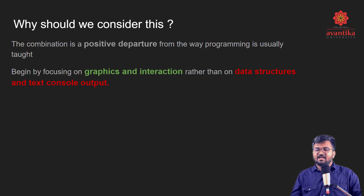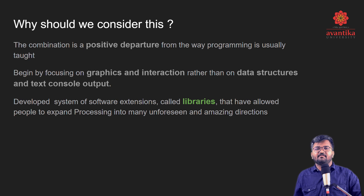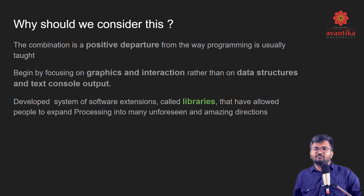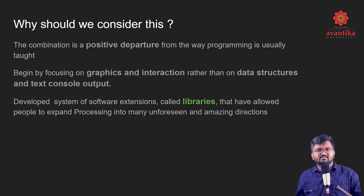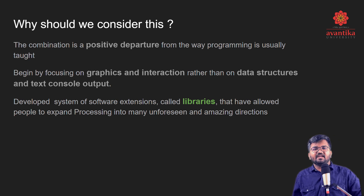Before we learn about data structures and text consoles, we should study graphics and interactions. People were writing code and getting output in terms of text and numbers, but numbers are very abstract — no one can easily extract meaning from them. If you have graphics in front of you, you can make sense of the world. For that, people also developed libraries, and creative designers and engineers were allowed to use these libraries to reuse modular functionalities of code in amazing ways.